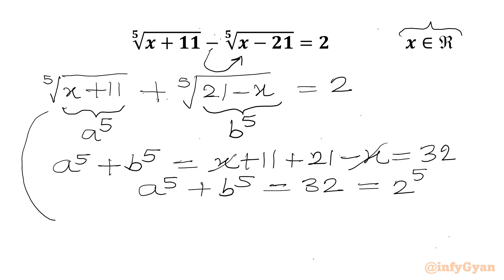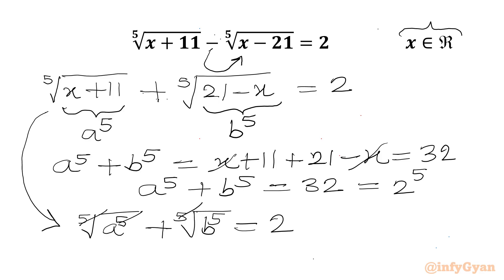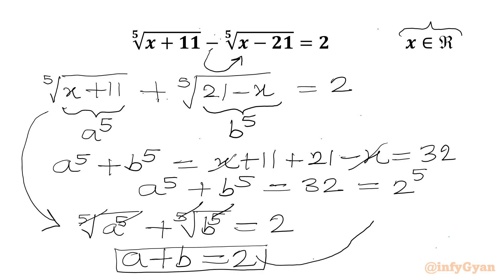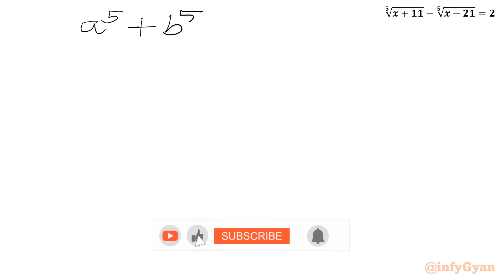From the original equation we can write the 5th root of a⁵ plus the 5th root of b⁵ equals 2. The 5th root and the 5th power cancel, giving us our second equation: a + b = 2. Now I will substitute this value — since a + b = 2, we can write a⁵ + b⁵ = (a + b)⁵ = 2⁵.